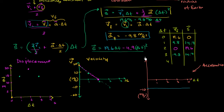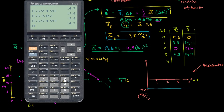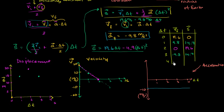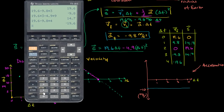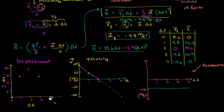After four seconds, velocity is 19.6 minus 9.8 times 4, which equals negative 19.6 meters per second. The magnitude is the same as when we initially threw the ball, but now directed downward. For displacement: 19.6 times 4 minus 4.9 times 16 equals 0. We are back on the ground.